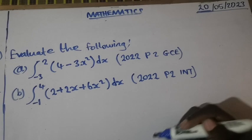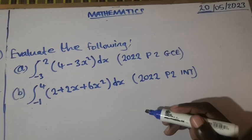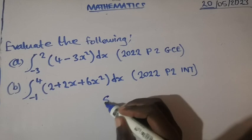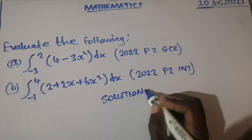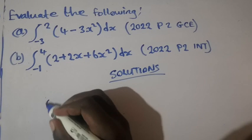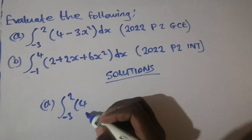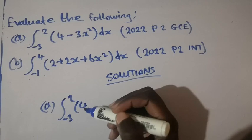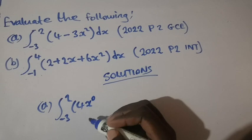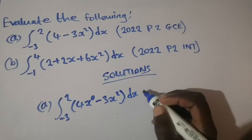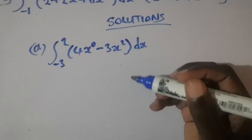So the questions we are having here, they are under definite integral. For Part A, we have the integral from negative 3 to 2 of the bracket 4 minus 3x squared. This is a definite integral because we have the upper limit and the lower limit.